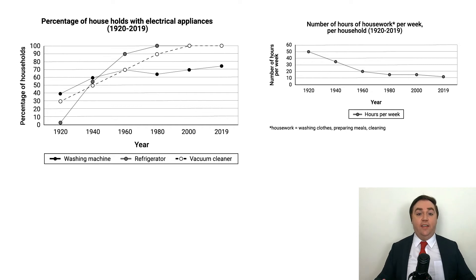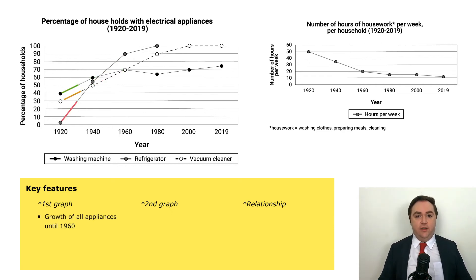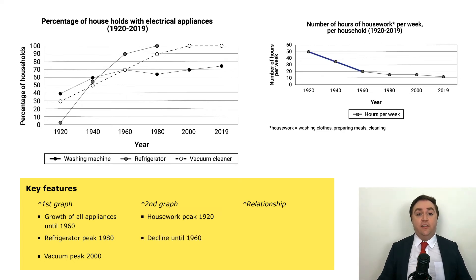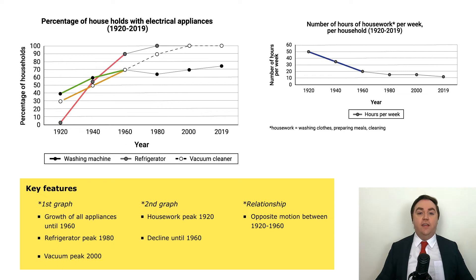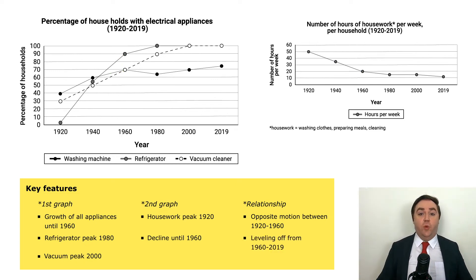Finally, let's review the data and key features we have chosen to include. For graph 1, we include the growth of all three electrical appliances until 1960; next, the peak of refrigerator in 1980; then, the peak of vacuum cleaner in 2000. For graph 2, we include the high point of housework hours in 1920, then the sharp decline until 1960. Finally, we include the relationship between the two graphs: first, the opposite motion between housework hours and electrical appliances from 1920 to 1960; then, the general leveling off of both graphs from 1960 to 2019.